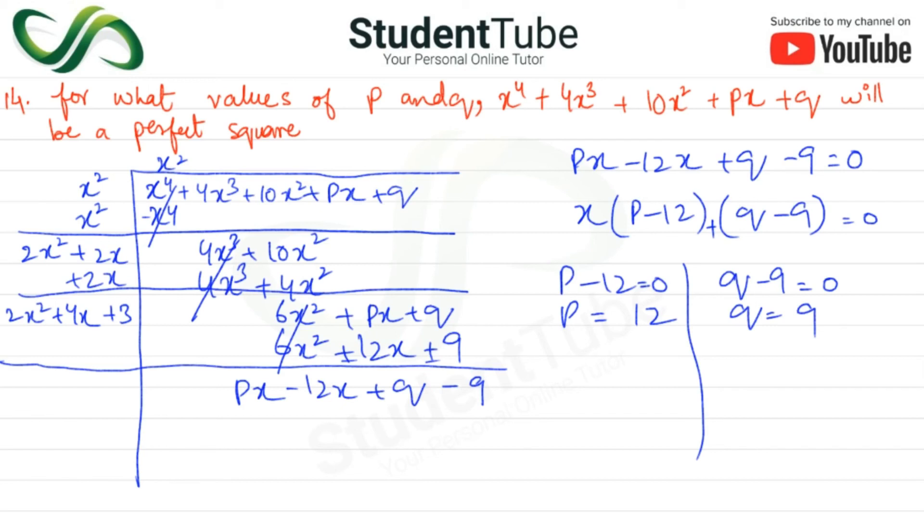So 12 and 9 will satisfy this equation, so this will be a perfect square. So here will be +4X and +3. With this, question complete. I hope you will understand.